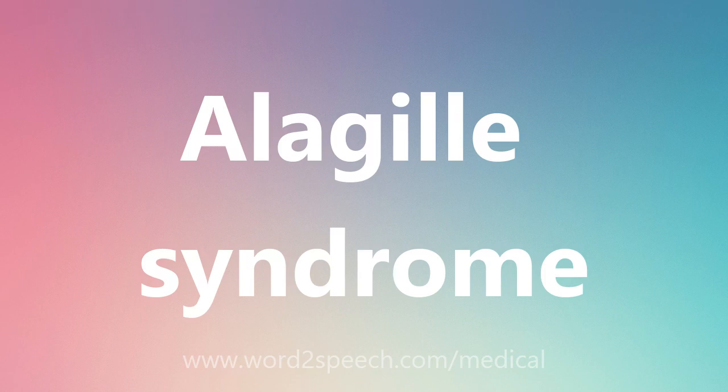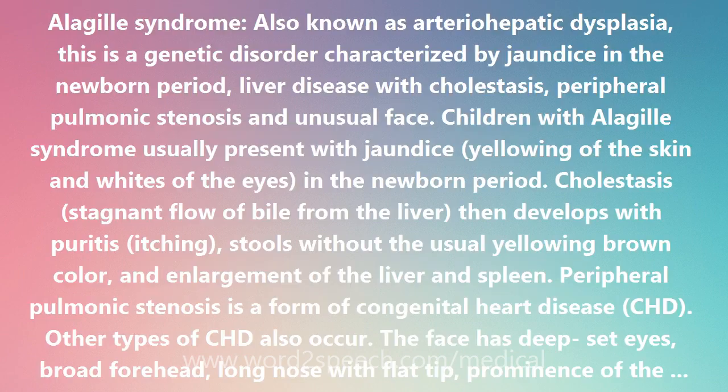Alagille syndrome, also known as arteriohepatic dysplasia, is a genetic disorder characterized by jaundice in the newborn period, liver disease with cholestasis, peripheral pulmonic stenosis, and unusual facial features.